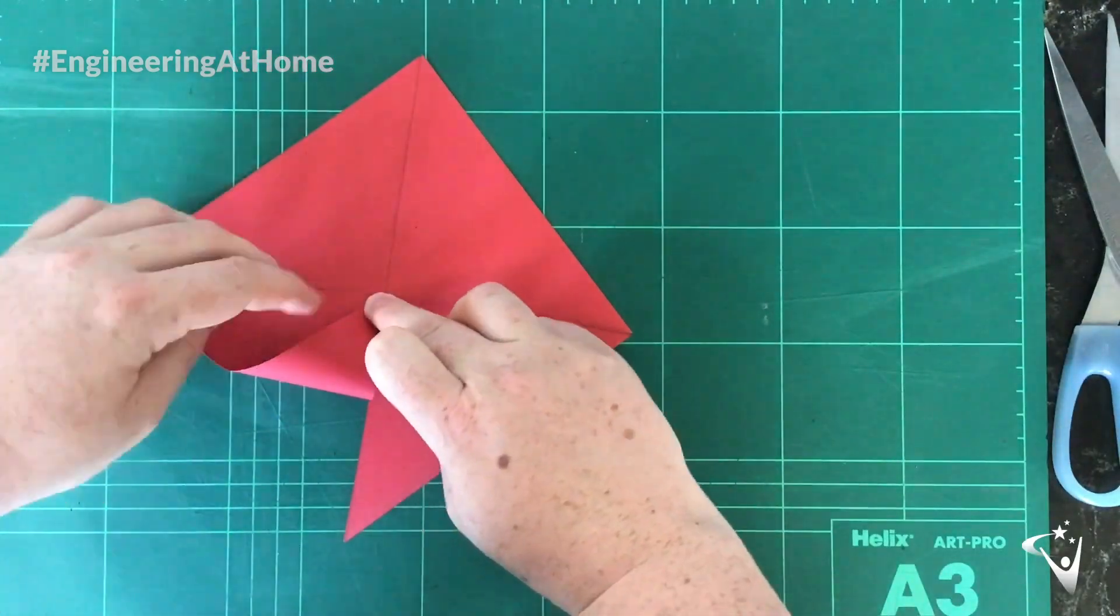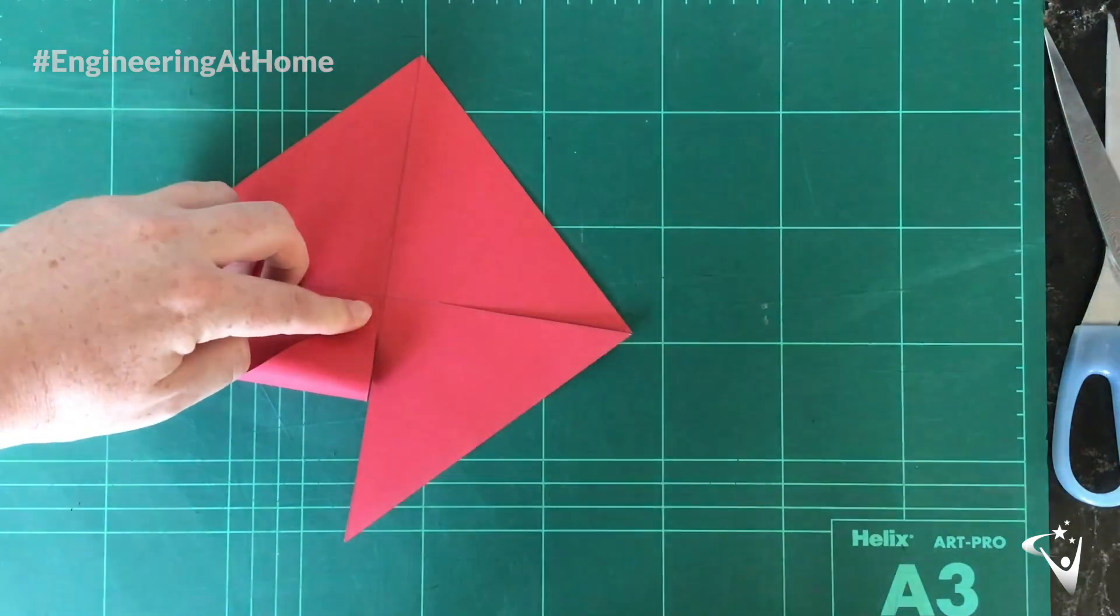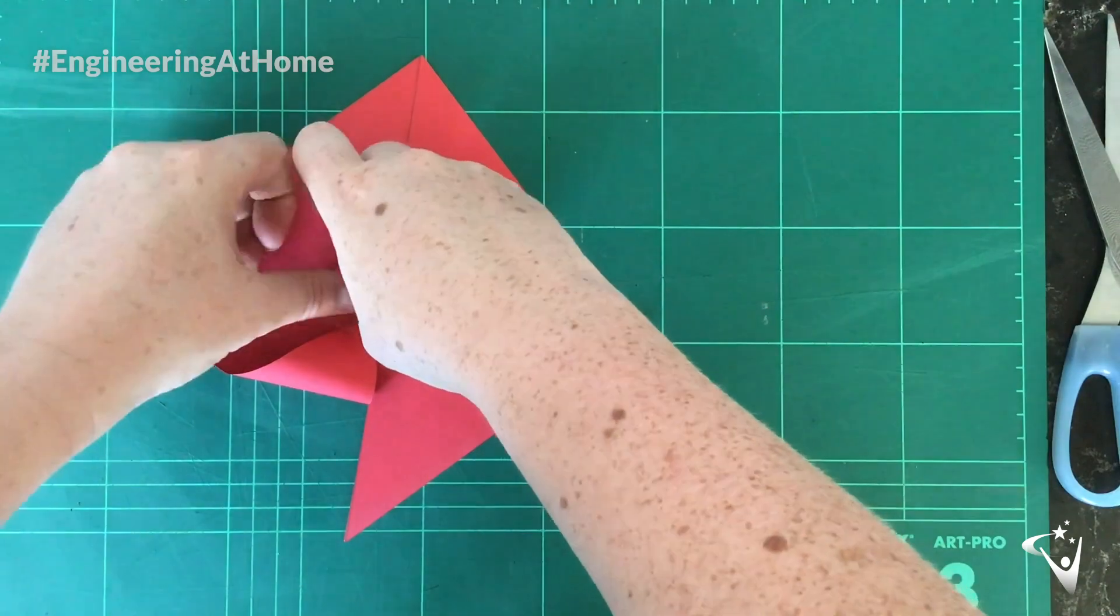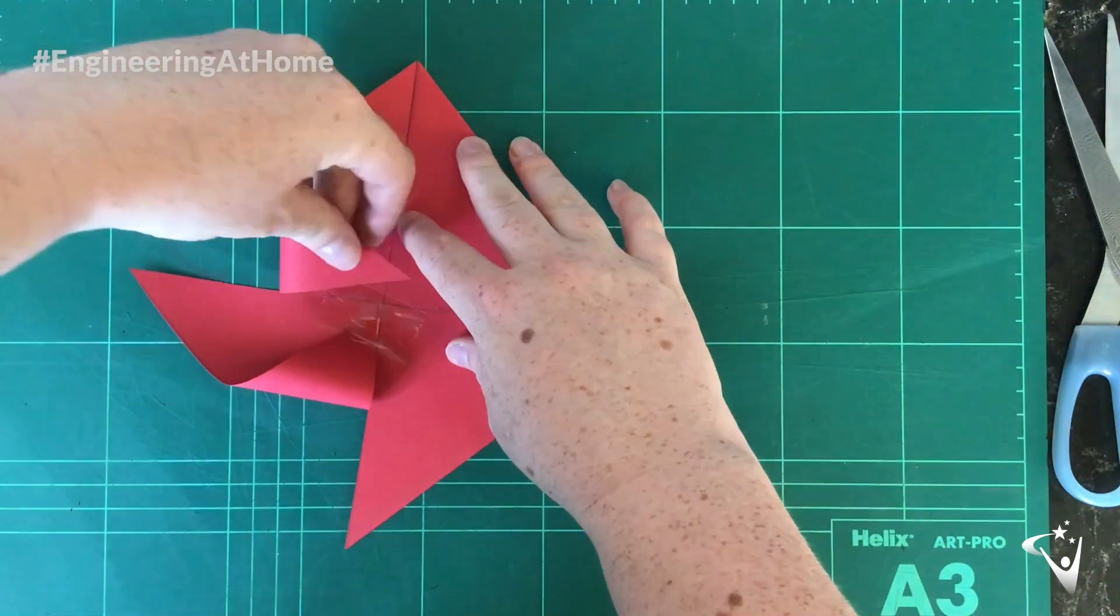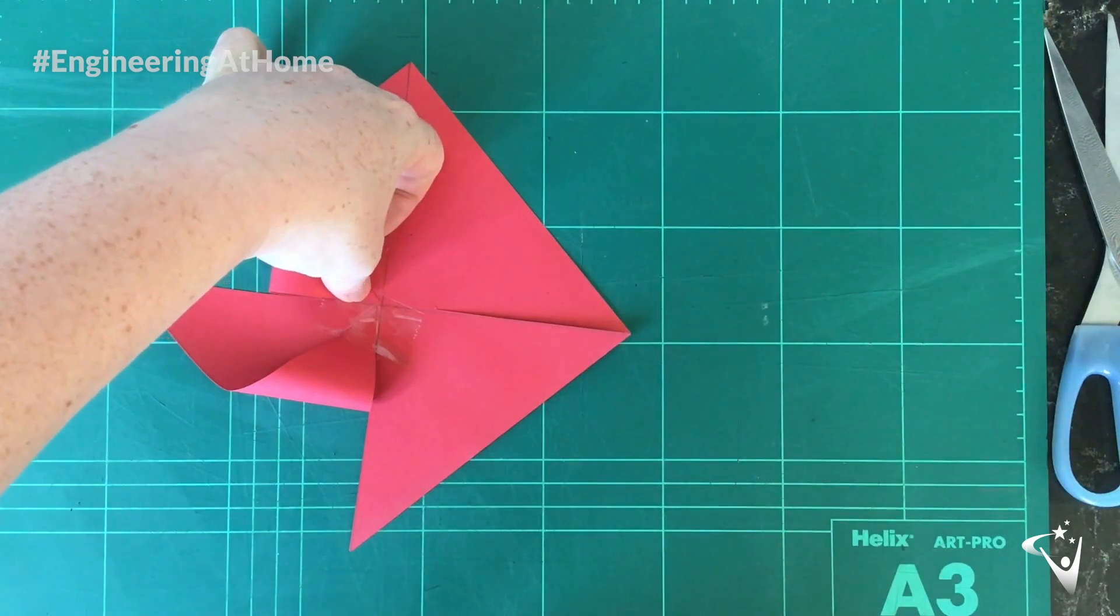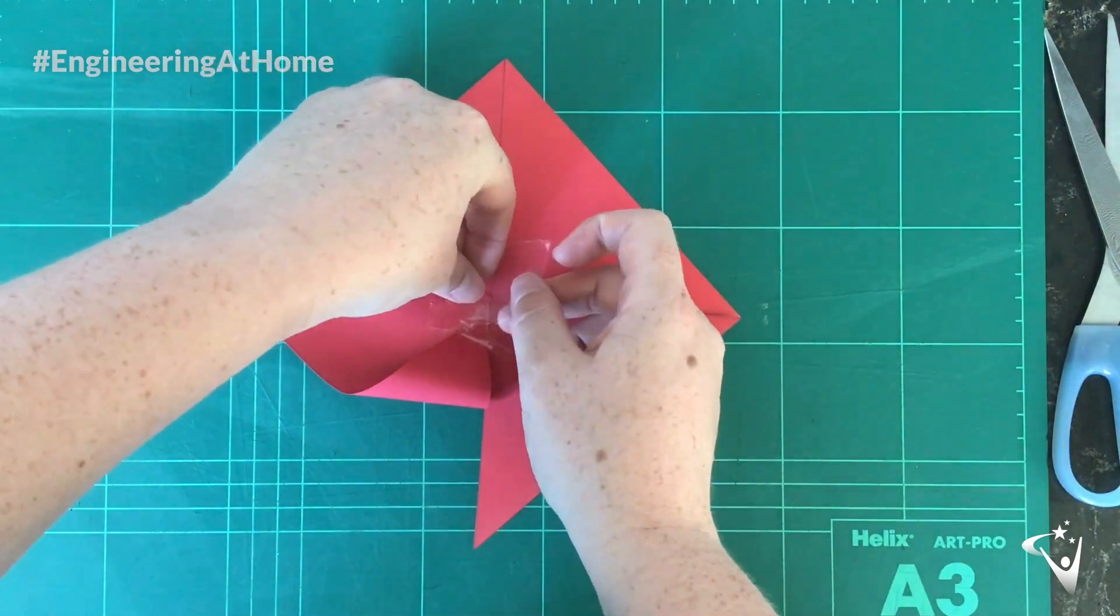Now what you're going to do is fold in one corner of the side and tape it into the middle. You're then going to repeat this for alternating corners around the whole square. So as you can see one corner's folded in, the next one's left alone and then you fold in the one after.